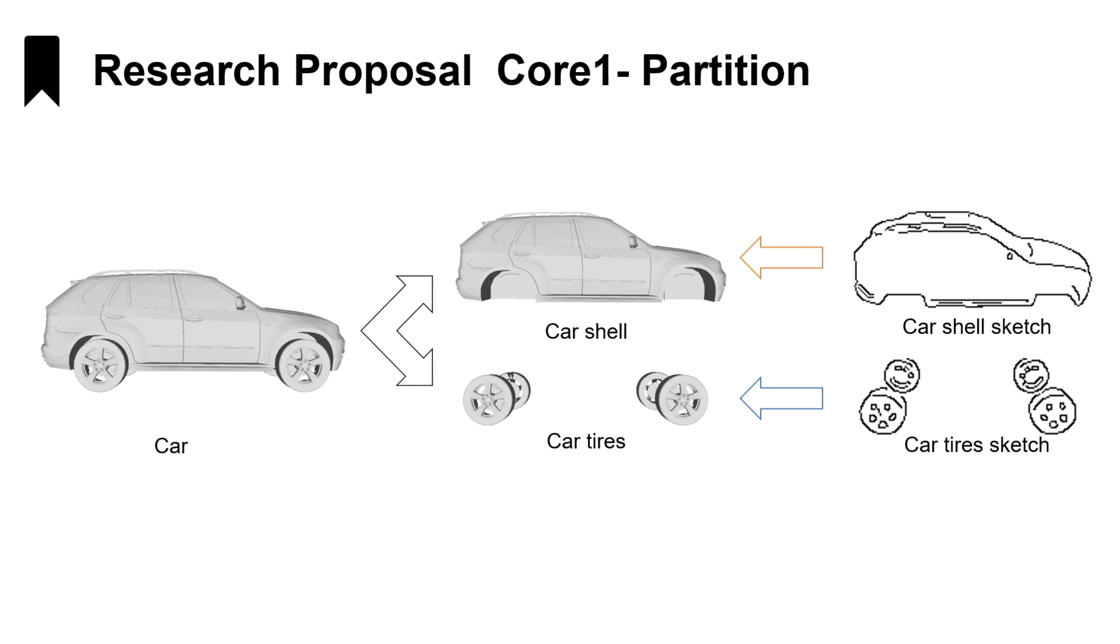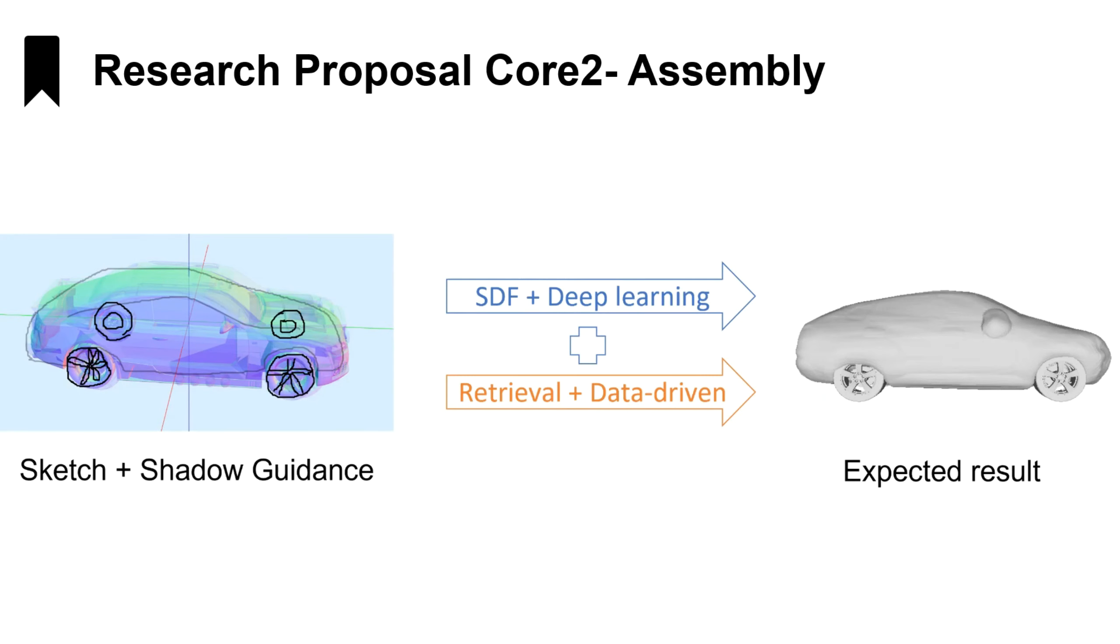Specifically, in this research we use the car model as the research object and split it into two composite parts: the car shell and the tires. For different parts of the partitioned model, we suggest using different approaches.